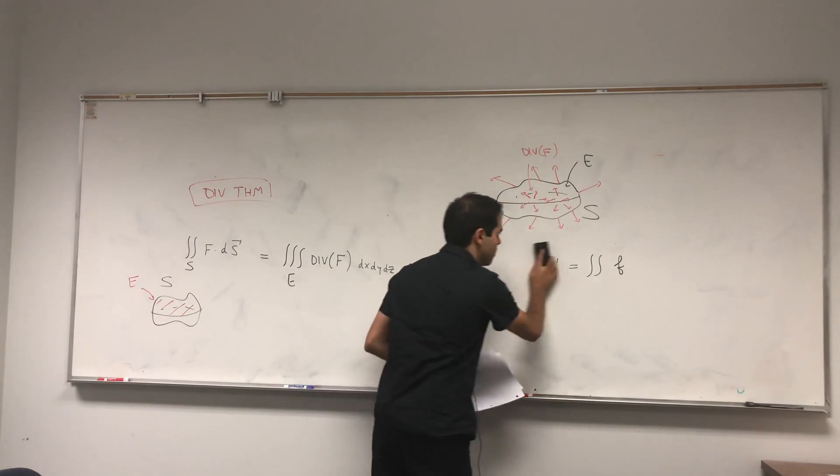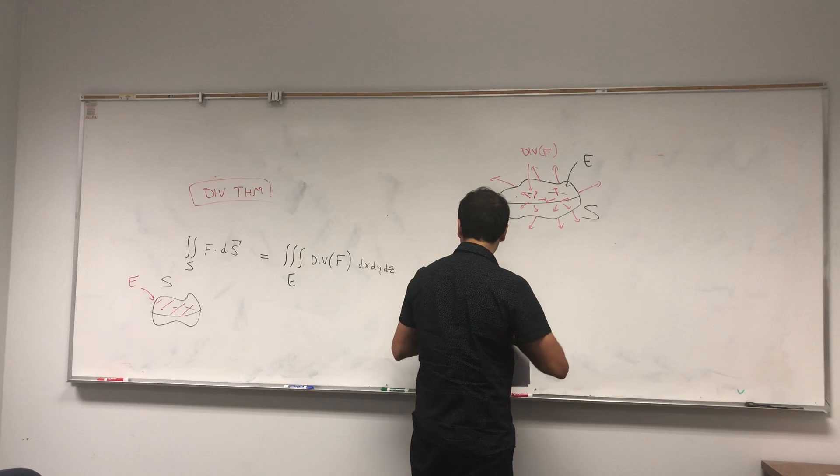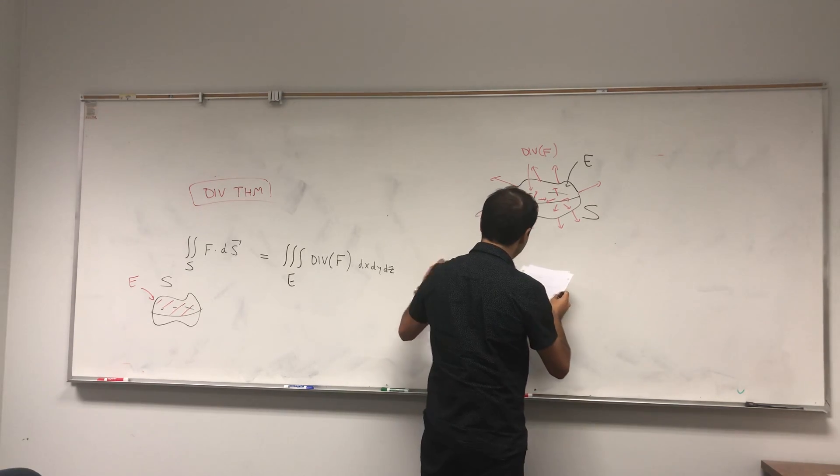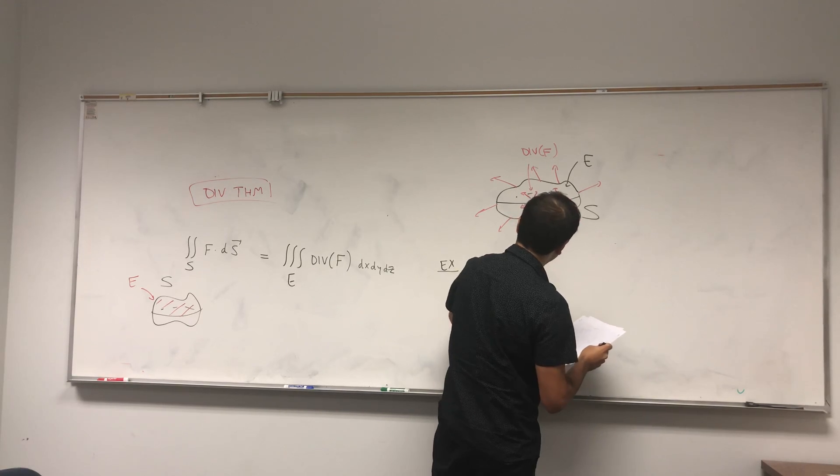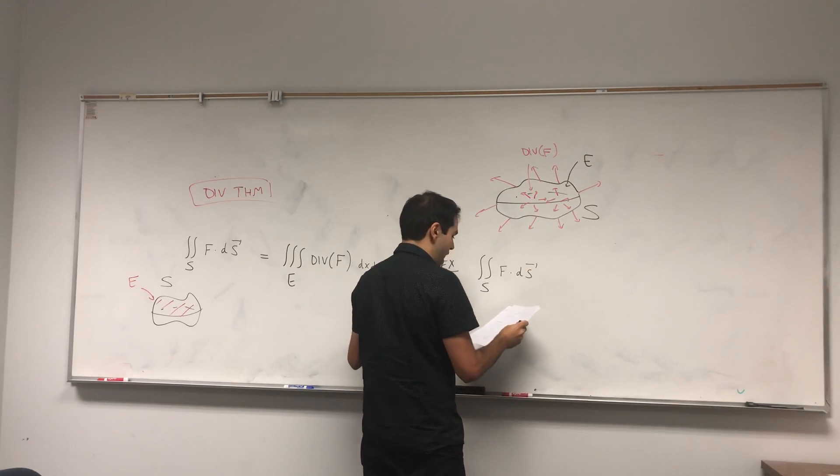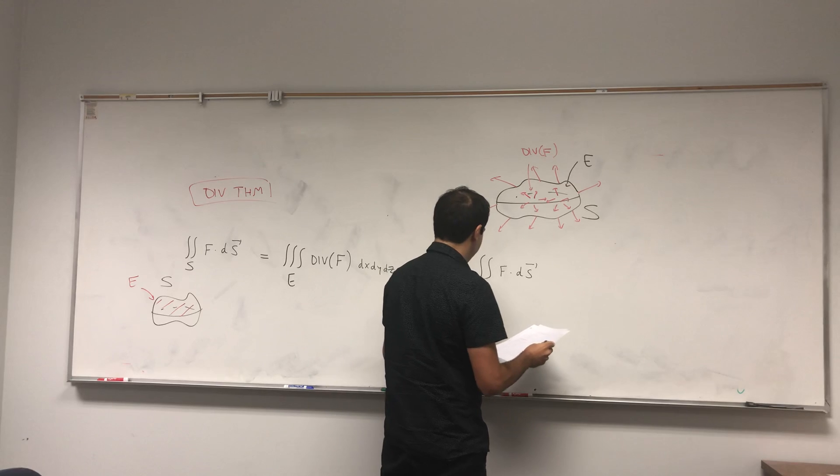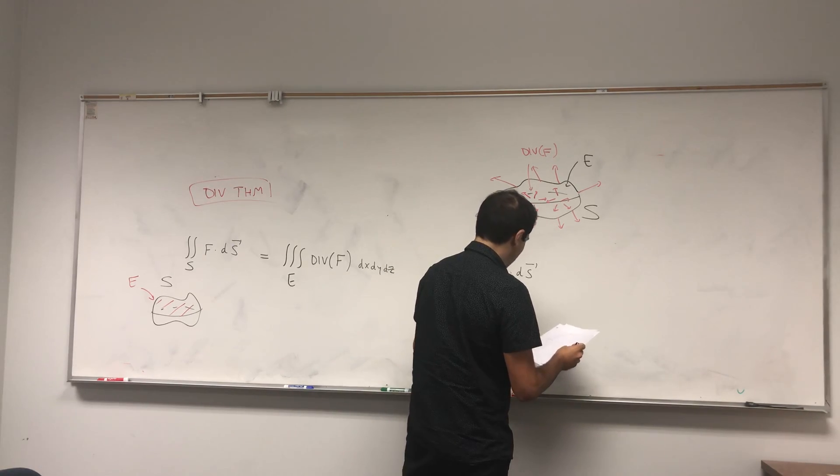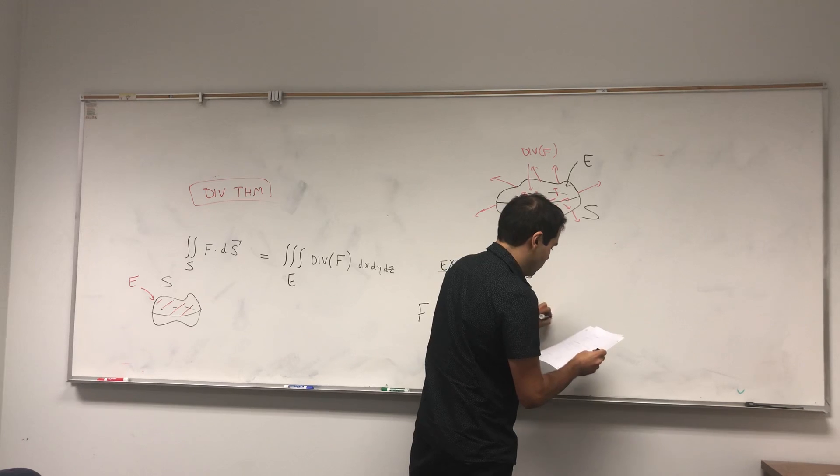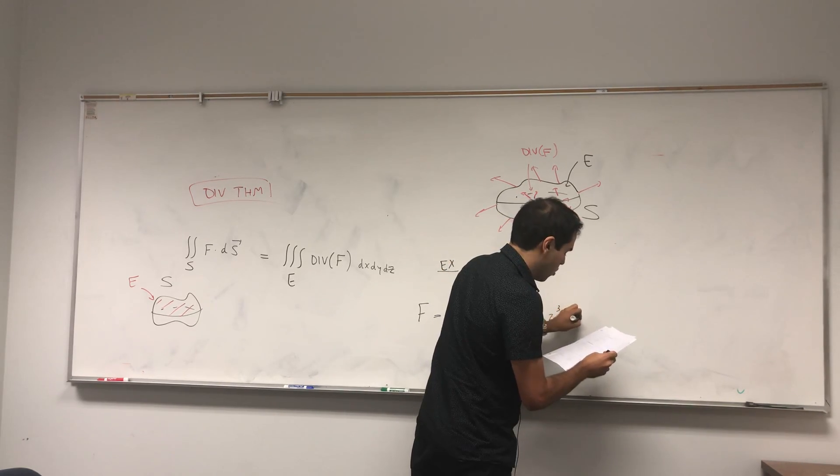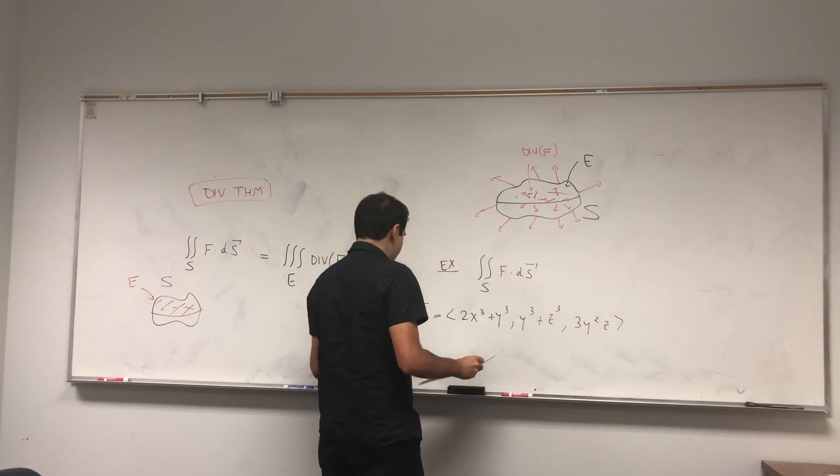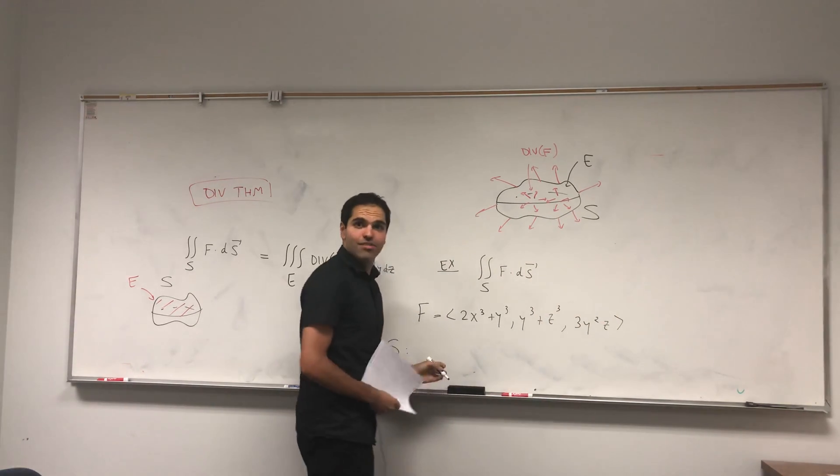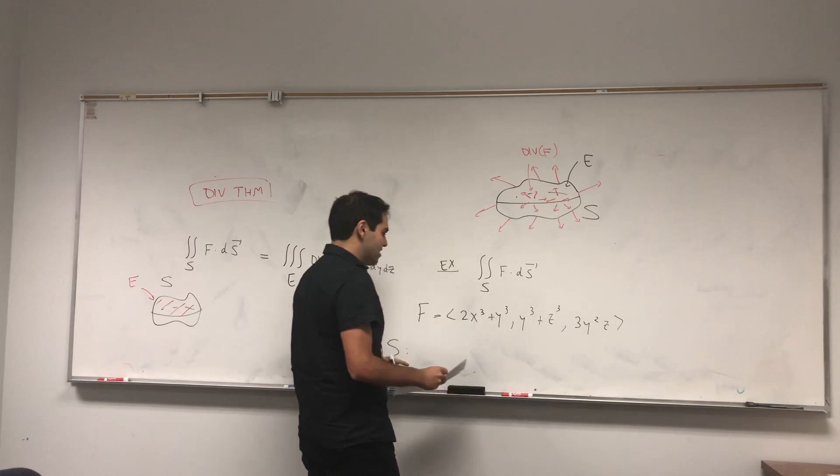That was the intuitive explanation. Now let's see how great this is. Let's calculate something very complicated: the double integral of f·ds where f is this really complicated vector field (2x³ + y³, y³ + z³, 3y²z).